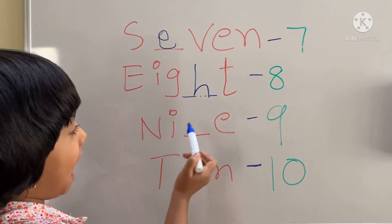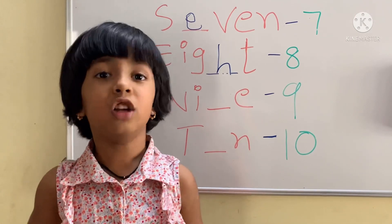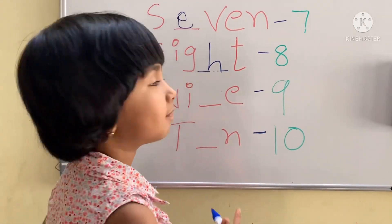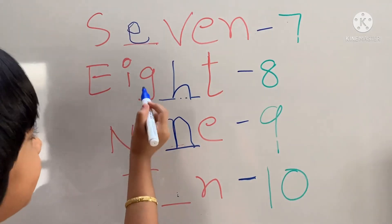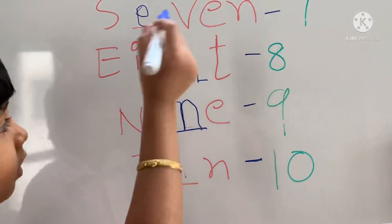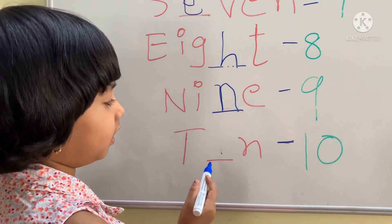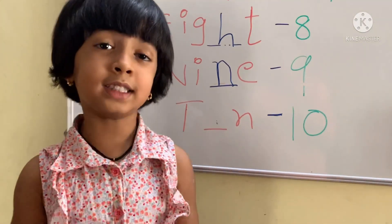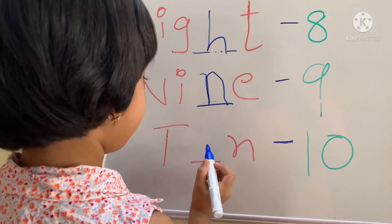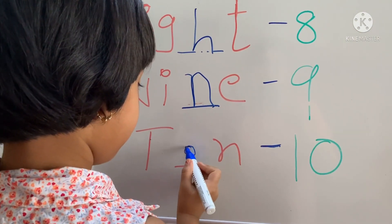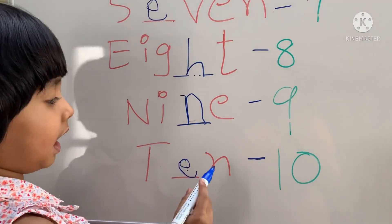N, I, E — what is missing children? Yes children, you know. N, E, I, G, H, T — Eight. F, N, I, N, E — Nine. E, N — what is missing children? Yes children, E. T, E, N — Ten.